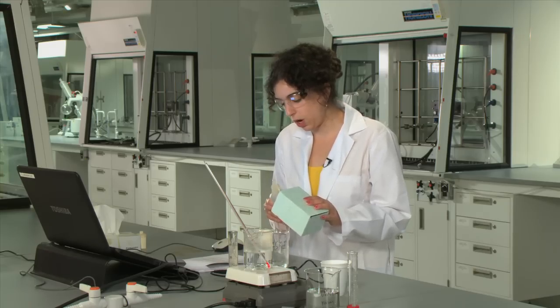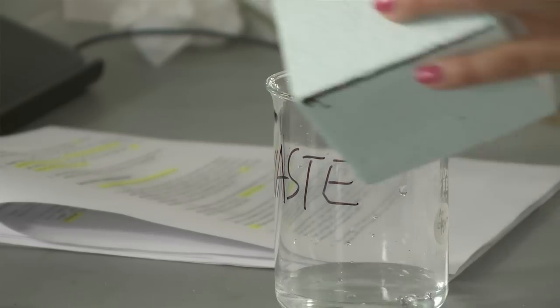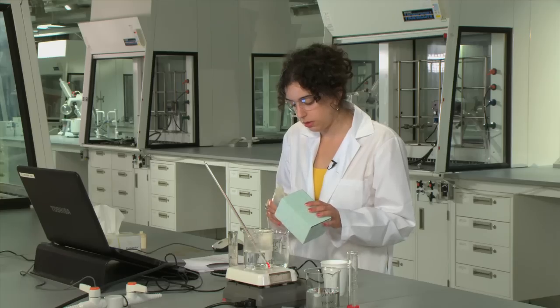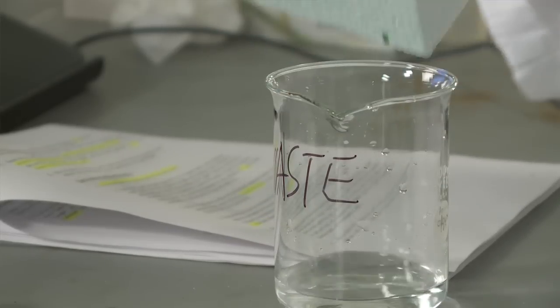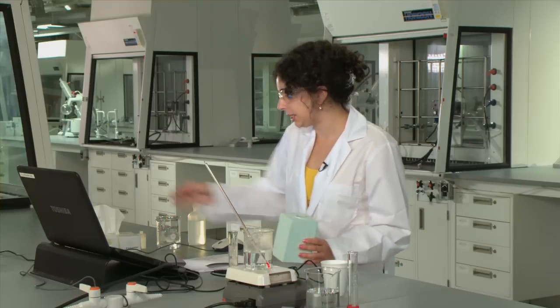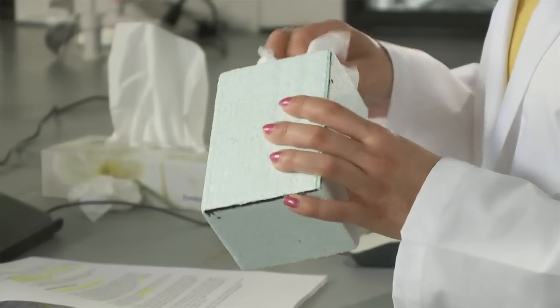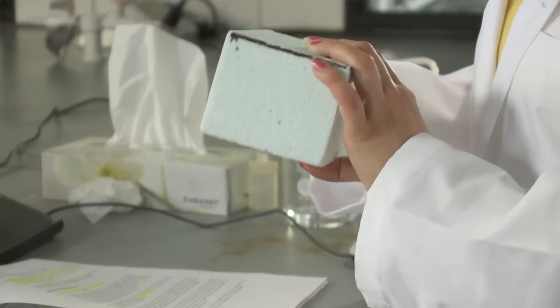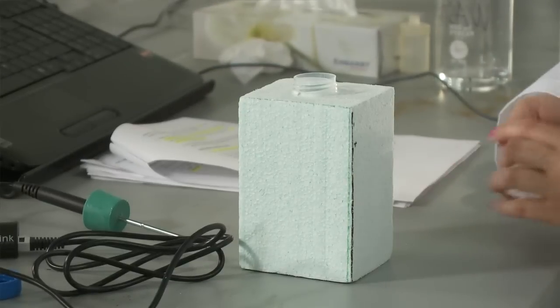You can give it a rinse with your wash bottle or you can use some more of your room temperature water from your beaker. And then to the best of your abilities dry out the inside of the calorimeter with a kleenex and then your calorimeter is ready to go for your next trial.